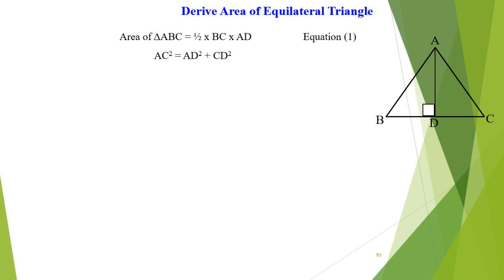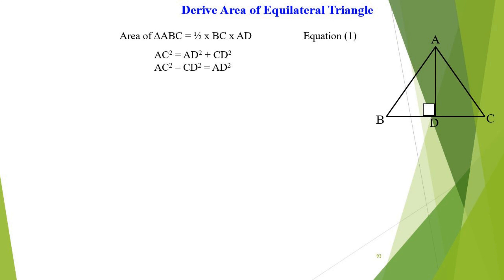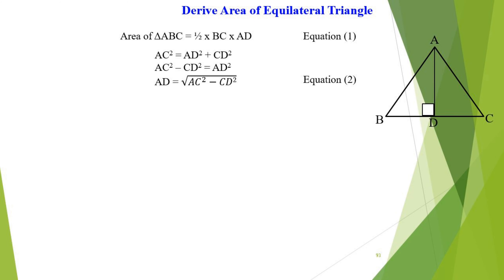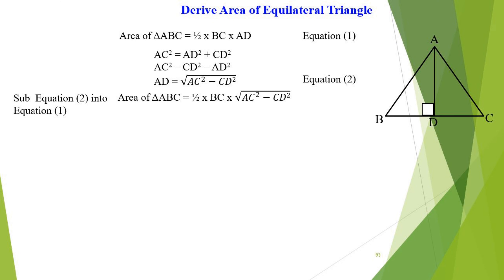AC squared equals AD squared plus CD squared. When we rearrange this equation, we get AC squared minus CD squared equals AD squared. Taking the square root of the whole term, we get AD equals the square root of AC squared minus CD squared. Let's label this as equation 2.